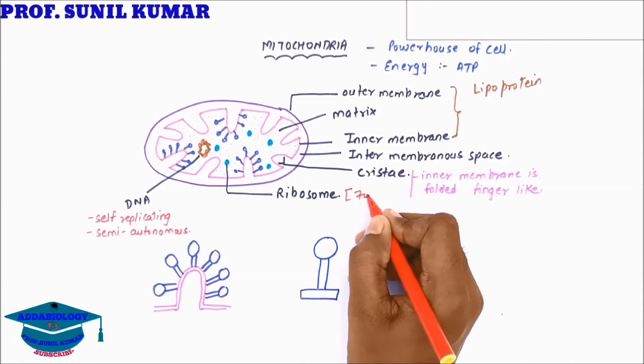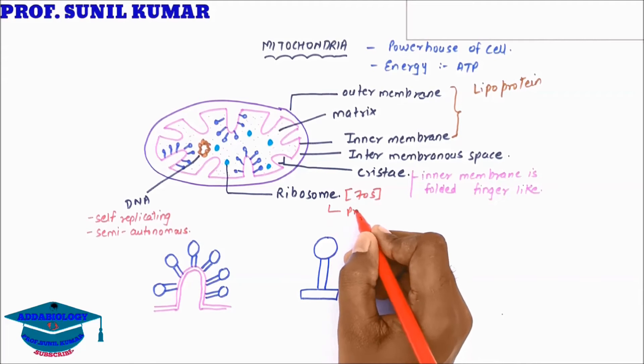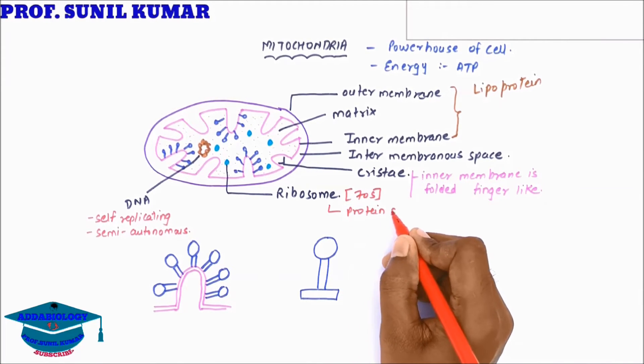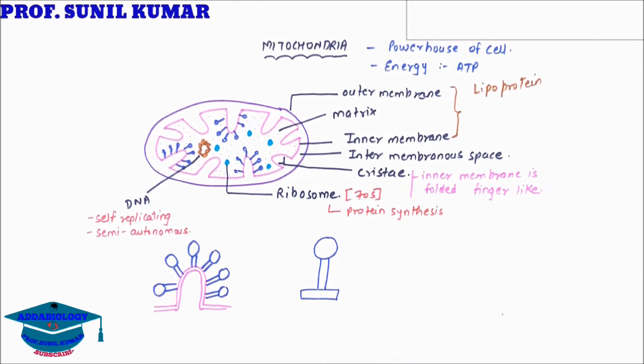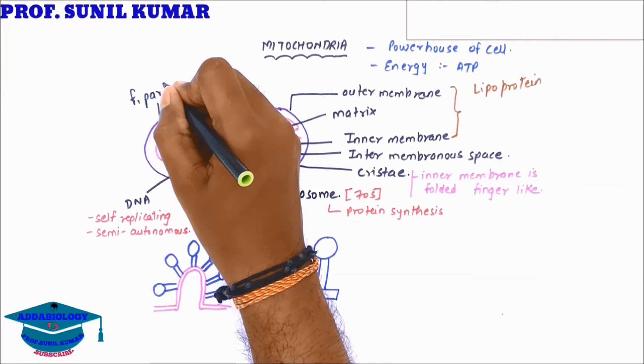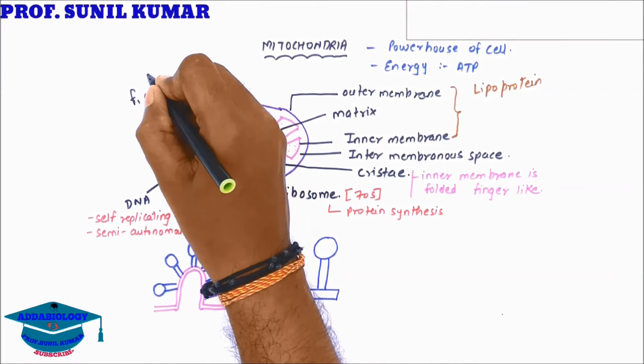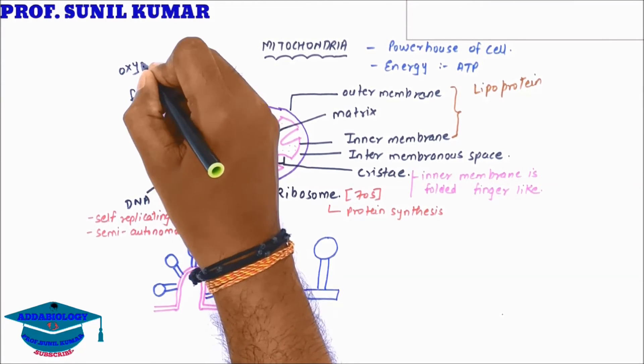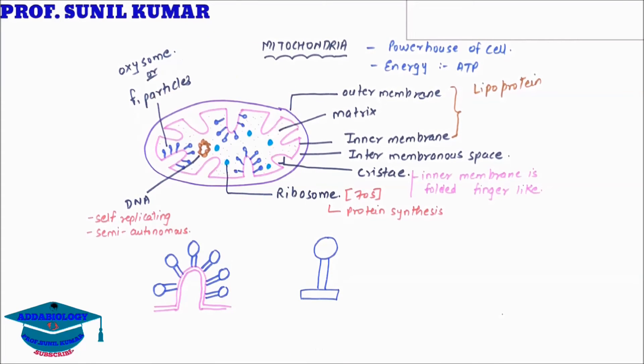Inside the mitochondria, the ribosome is of 70S type, and its function is protein synthesis. The Cristae has special particles called F1 particles, which are also called Oxysomes or elementary particles. This is Cristae representing F1 particle.